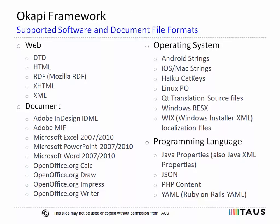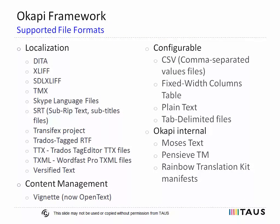Standard web content formats are a strong focus in Okapi and are fully supported. It also has good support for Microsoft Office and OpenOffice/LibreOffice file formats, and some desktop publishing formats, with FrameMaker and PDF as notable exceptions. For the translation of software applications, Okapi supports virtually all string resource formats used in software development today, with Windows RC files as a notable absence. In terms of localization file formats, Okapi supports a wide variety of industry standard and vendor standard formats. For simple file formats like comma-separated tables or plain text, Okapi provides highly configurable filters that allow you to extract only the text that is to be machine-translated.